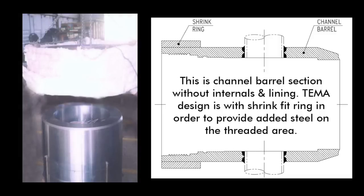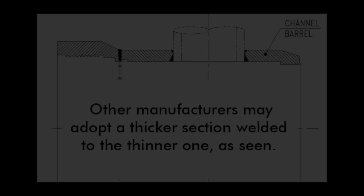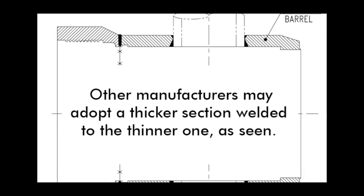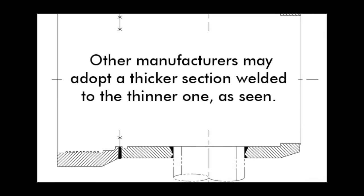This is done by shrink-fitting a ring on the threaded part of the seamless channel barrel. The alternative is to make this channel from two individual units, one being thicker, with a welded joint. As a result, the channel barrel is no longer seamless.